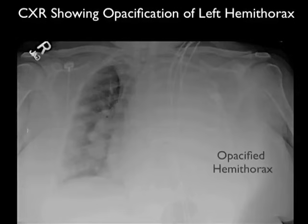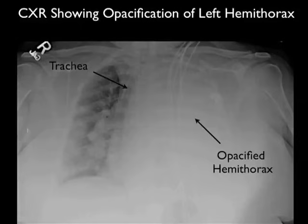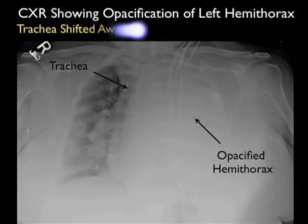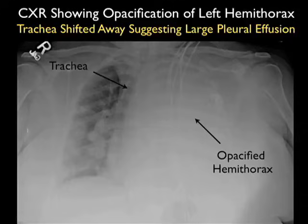In this SoundBytes module, I'd like to begin by discussing the case of a patient who presented with worsening shortness of breath and had a chest X-ray which revealed this finding. Notice here we have the presence of an opacified left hemithorax, and notice here that the trachea is pushed away from the left hemithorax, suggesting the presence of a very large pleural effusion as the cause of our patient's dyspnea.